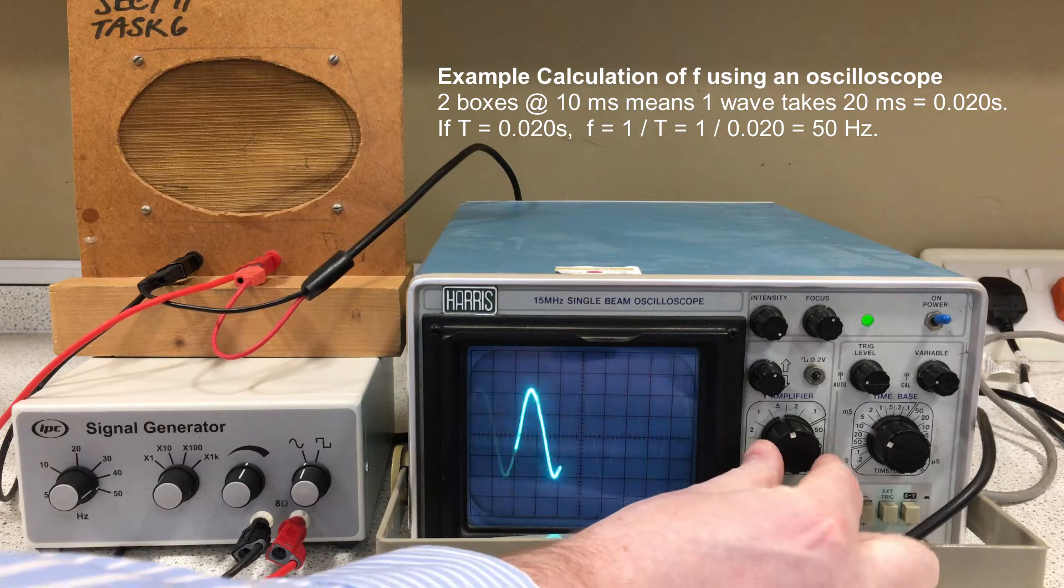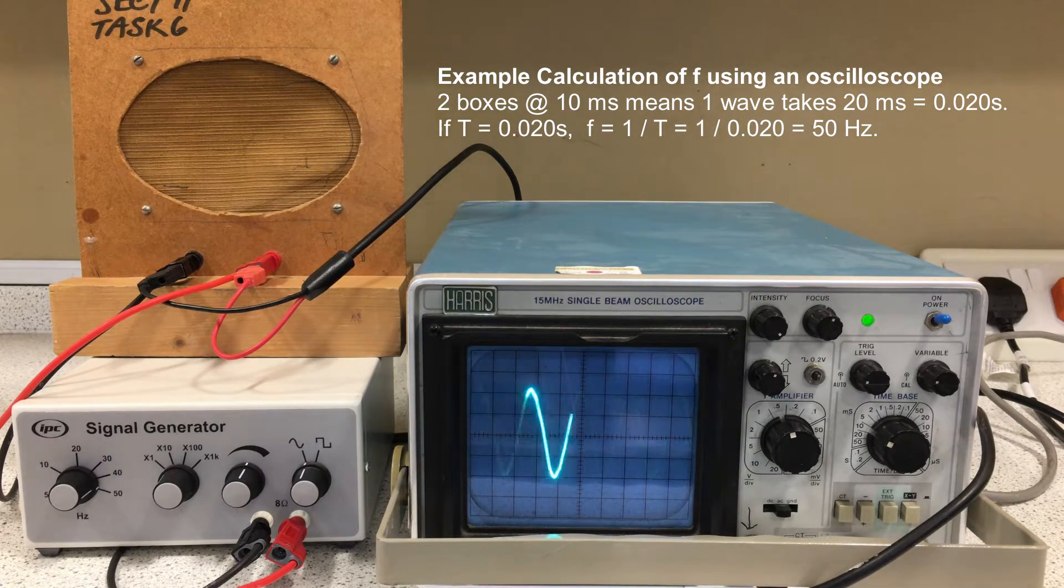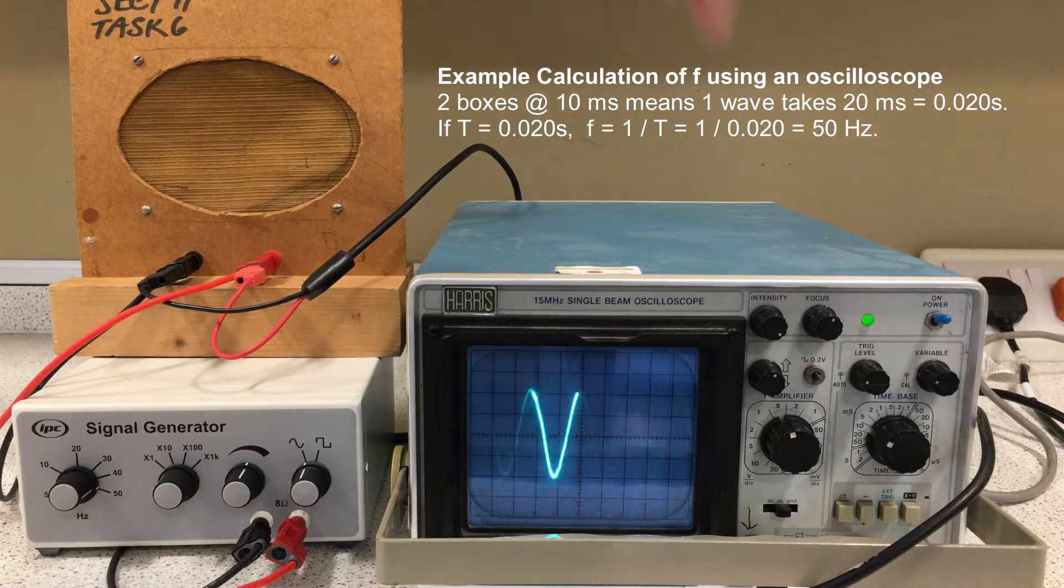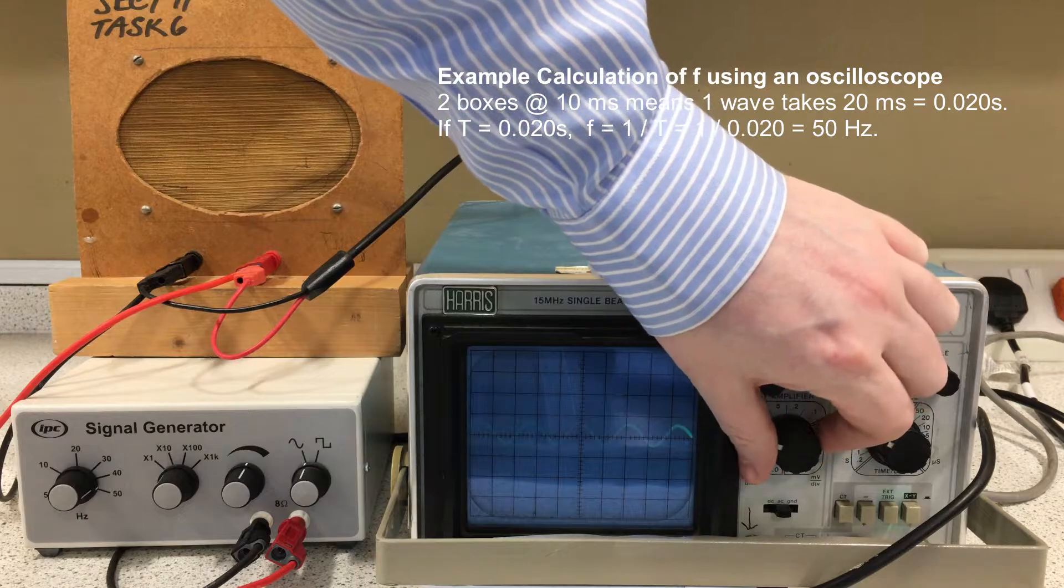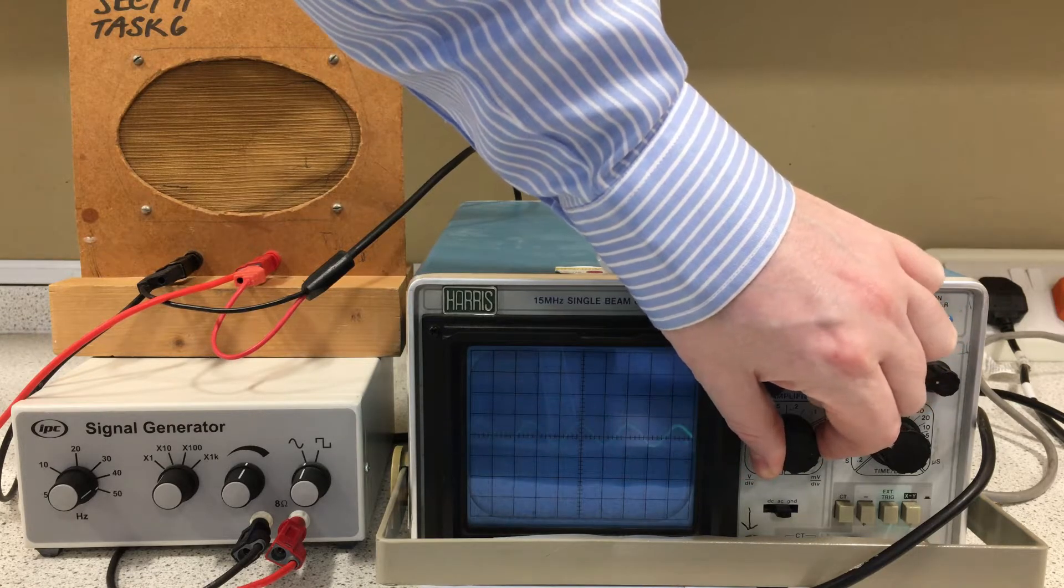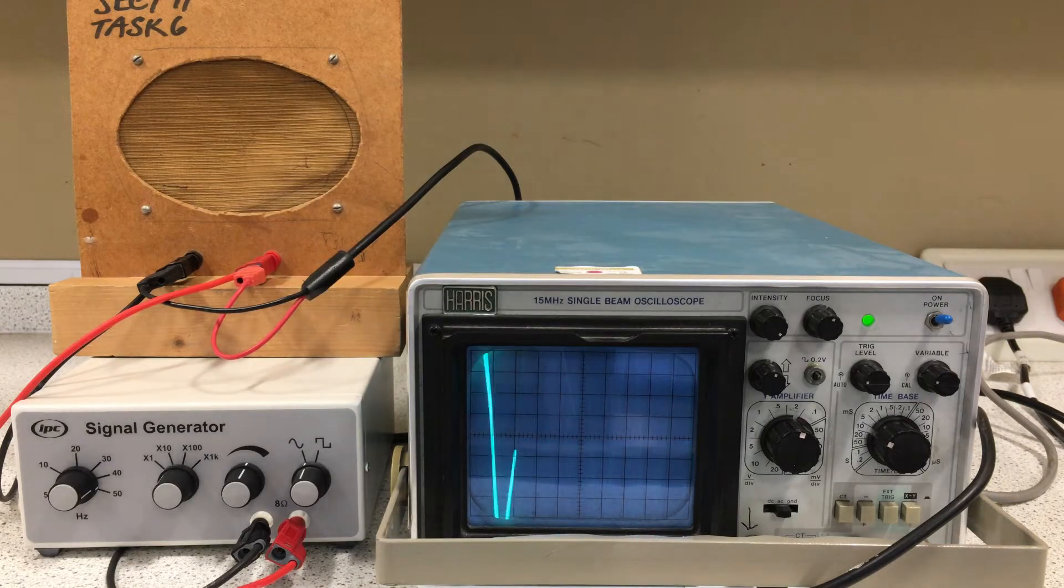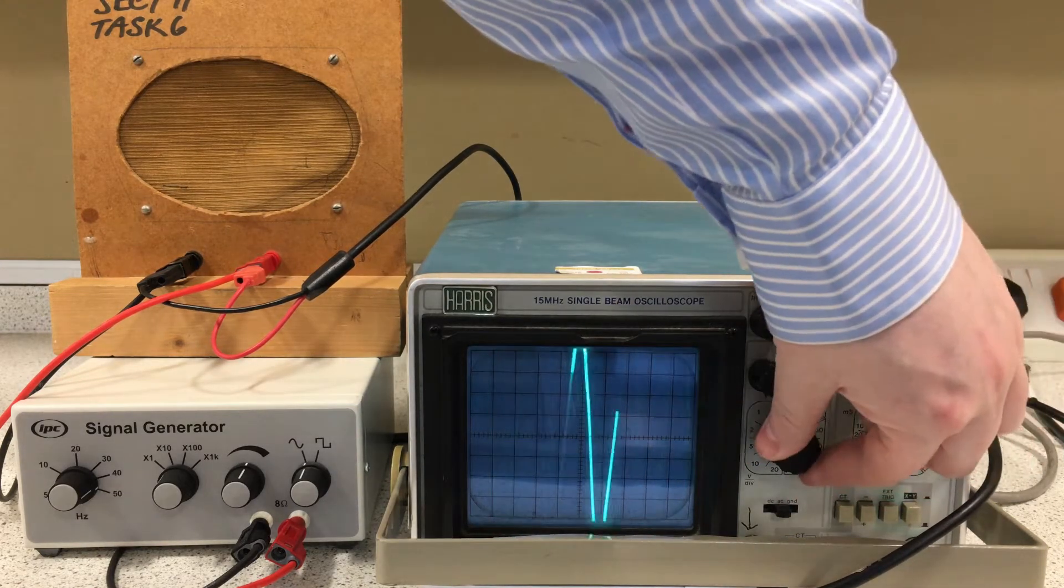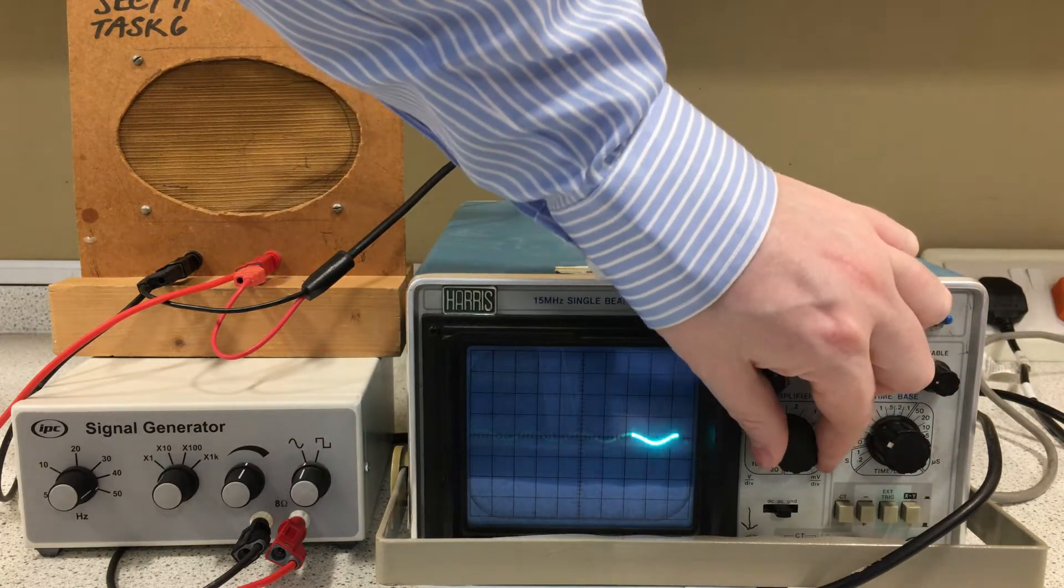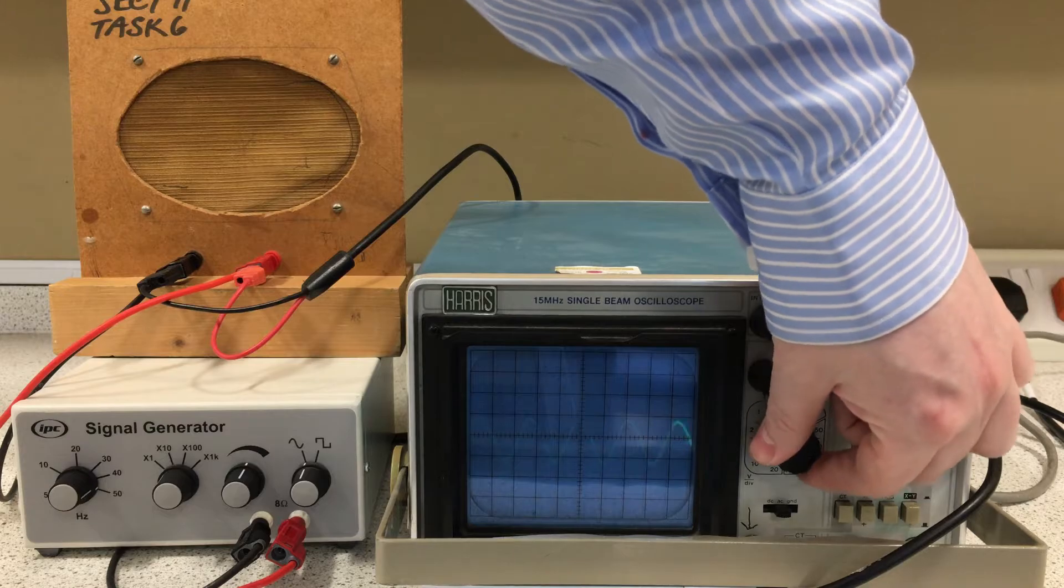The other control here is the voltage gain. This allows us to zoom in and out in the Y direction. It allows us to look at bigger amplitude or smaller amplitude signals. If you have it set too sensitively, you don't see much. And if you have it set too coarsely, you also don't see much. As with most things, a little balance is needed.